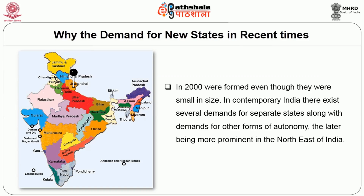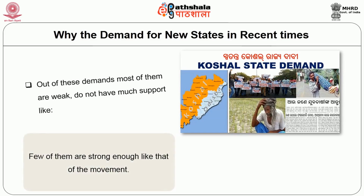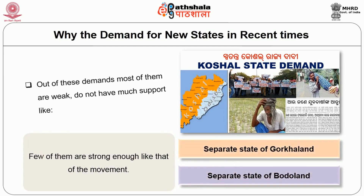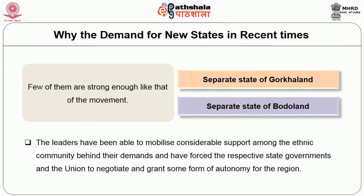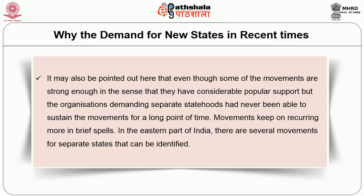There exist several demands for separate states along with demands for other forms of autonomy, the latter being more prominent in the North East of India. Out of these demands, most are weak and do not have much support, like the Kozel movement in the western part of Gorkhland or the movement for the separate state of Bodoland. In Bodoland, however, the leaders have been able to mobilize considerable support among the ethnic community. Even strong movements with considerable popular support keep recurring in brief spells over a long period of time.